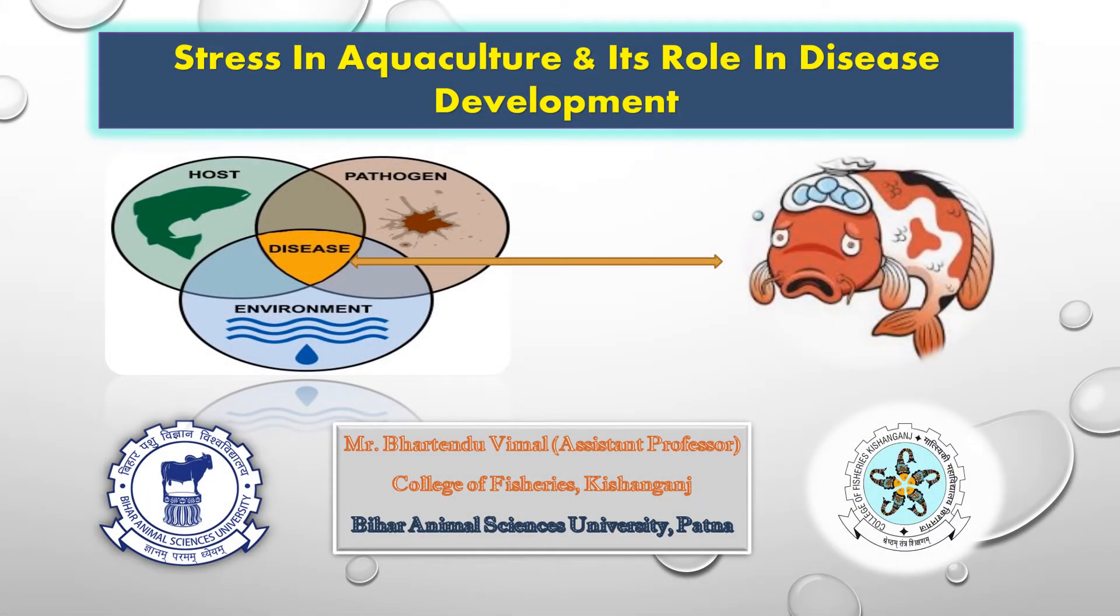Welcome my dear friends. Today we are going to learn about stress in aquaculture and its role in disease development. Prior to learning the disease development process, we must know how these disease events occur within a system. The disease event occurs when there is an improper balance between the environment, the pathogen, and the host. Of course, within an aqua farm, the host is fish, the pathogen lives under the water, and environment includes water and soil parameters.